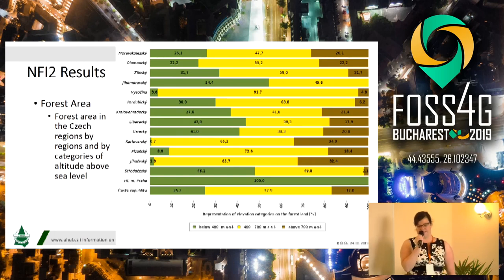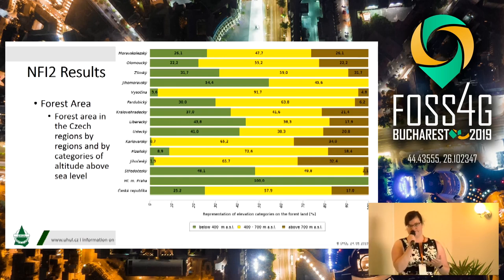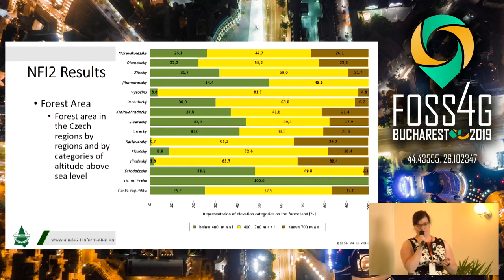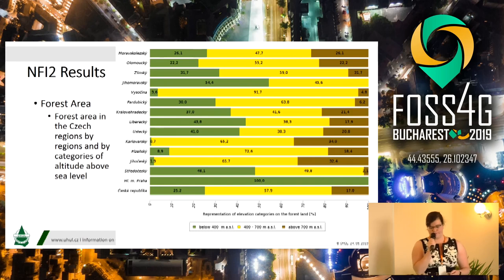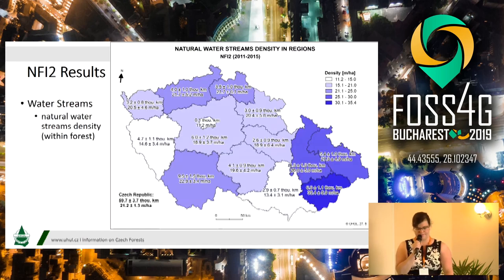Here is the same information in a graph. The Y-axis shows the names of regions and the X-axis shows the representation of elevation categories on the forested land. You can decide which visual representation to use to bring more information to your project.